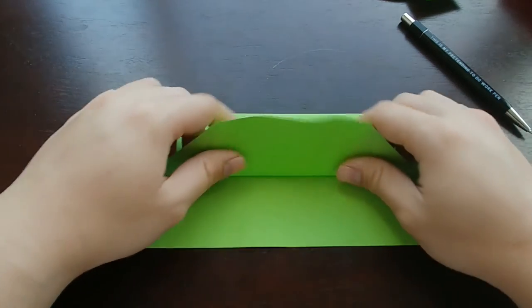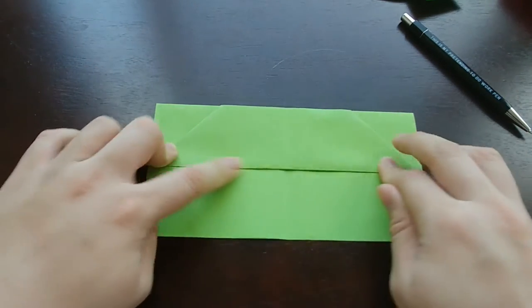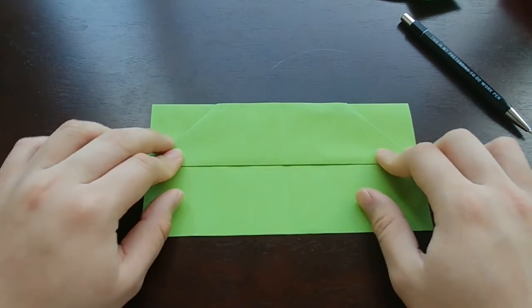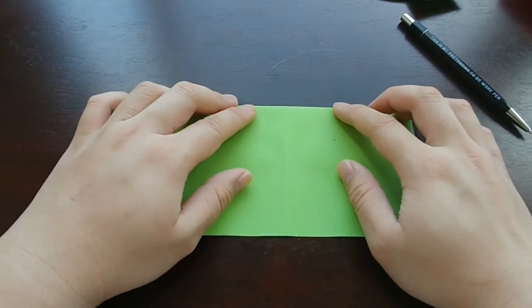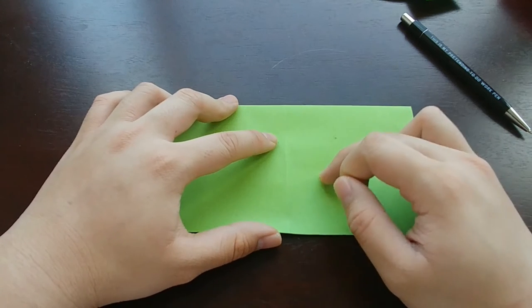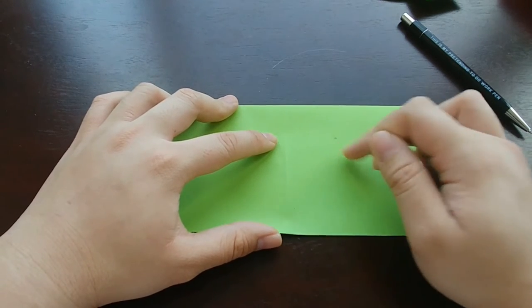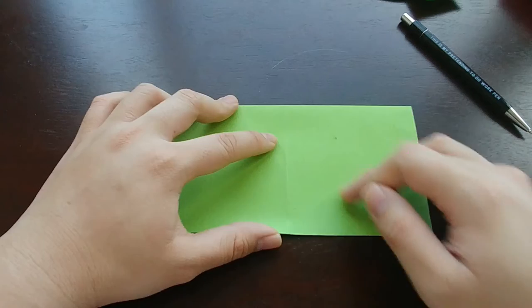Alrighty. So, once you have that, fold it back up. We're going to turn this model to the back now. So, we're going to do a couple things here. We're going to make some reference points. And then, this is what the, essentially, the bottom wings are going to be.